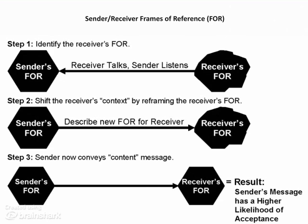Therefore, a hundred percent communication is a communication fallacy, and so the effective communicator prepares for possible misunderstanding ahead of time. This graphic shows a way you can do that: identify the receiver's frame of reference, then shift the receiver's context by reframing their frame of reference, so the sender's message has a much higher likelihood of acceptance because it can be understood by the receiver's frame of reference.